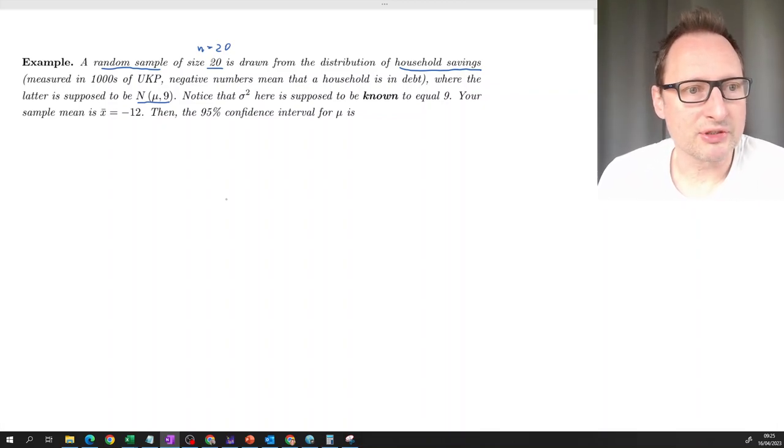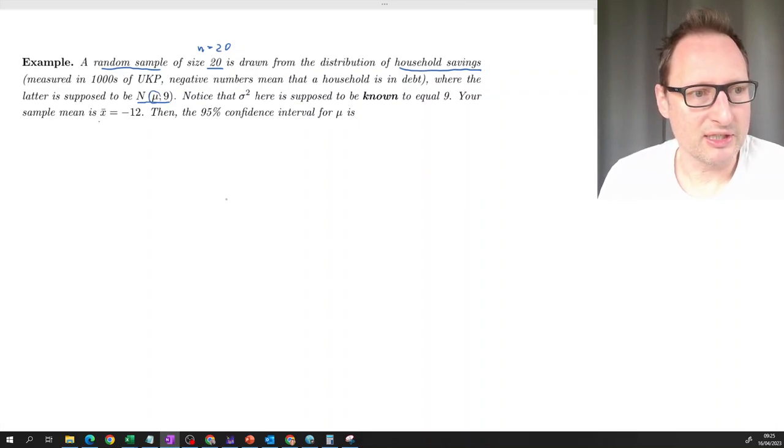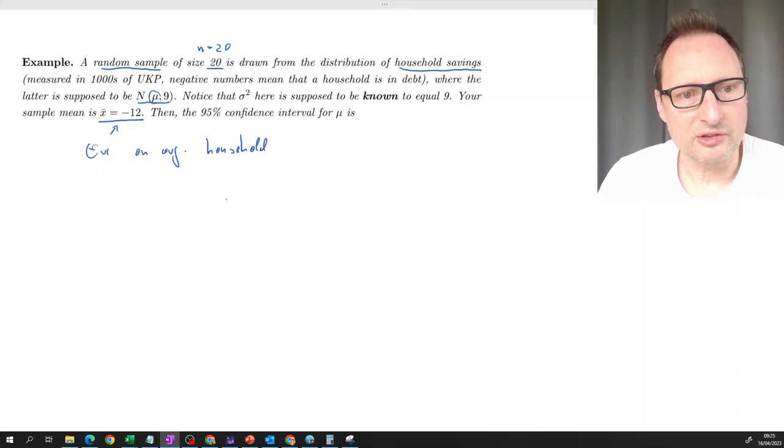And what we are interested in is this average amount of household savings in the population. In our sample of 20, we get an average value of negative 12. And negative numbers, that means that on average, households are in debt. That's a quite common situation.